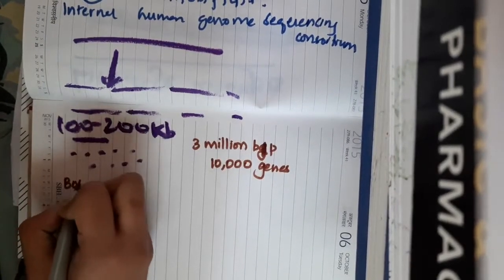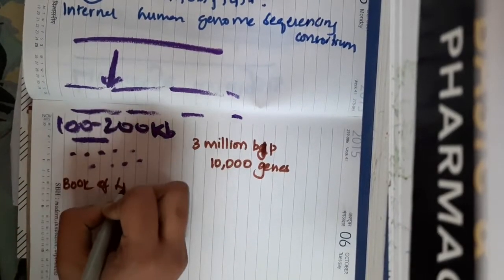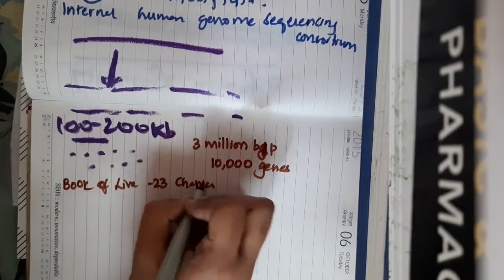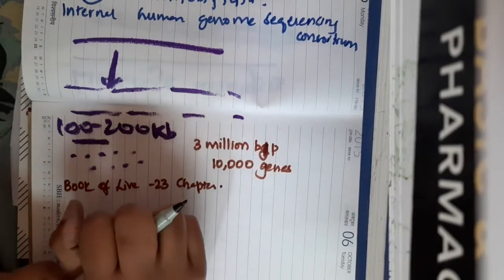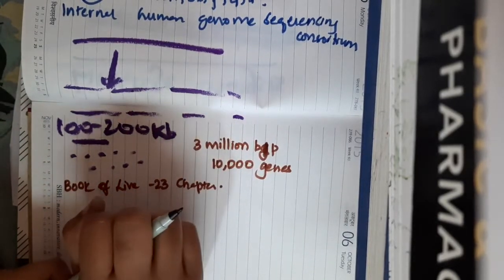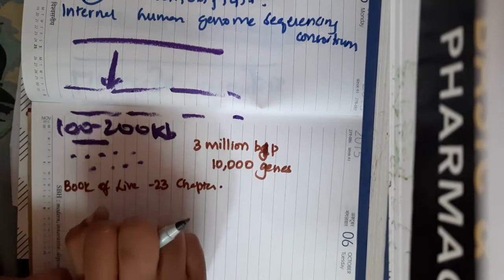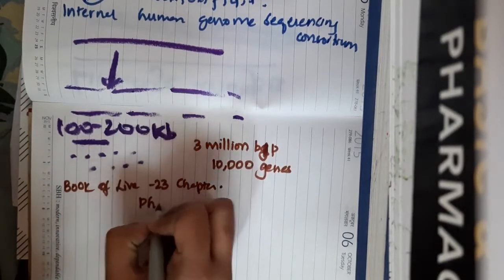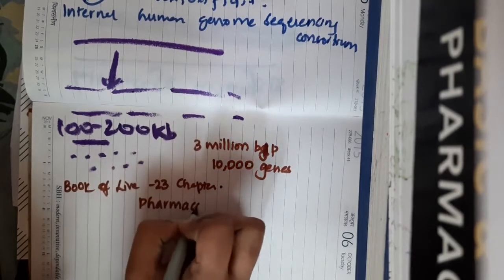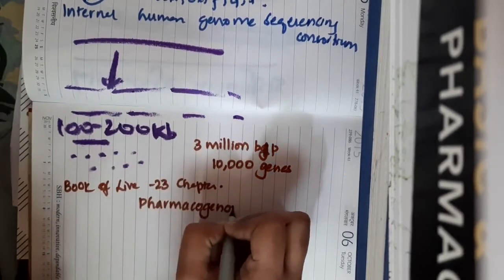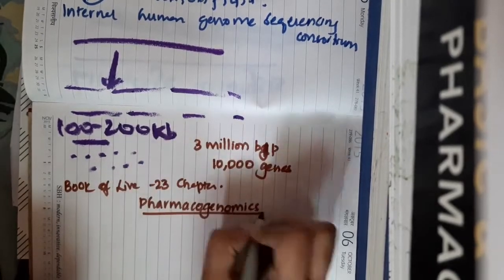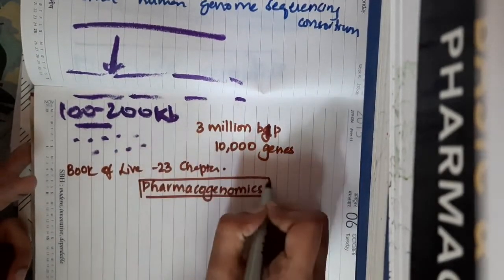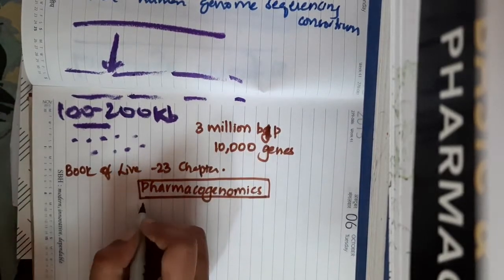10,000 genes have been sequenced with the help of this Human Genome Project. A book of life has been written, which contains almost 23 chapters, each chapter for each human chromosome. With this Human Genome Project, Pharmacogenomics has emerged. Pharmacogenomics is a branch of pharmacology where the drugs are administered based on their genetic constituent. This new branch emerged due to the Human Genome Project.